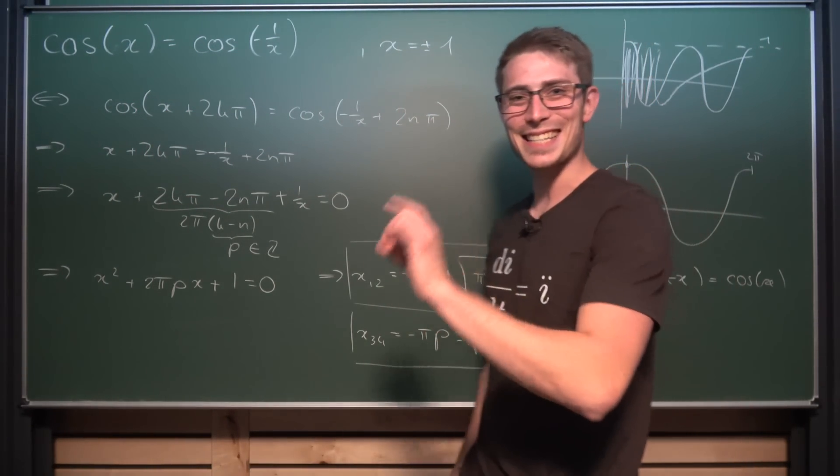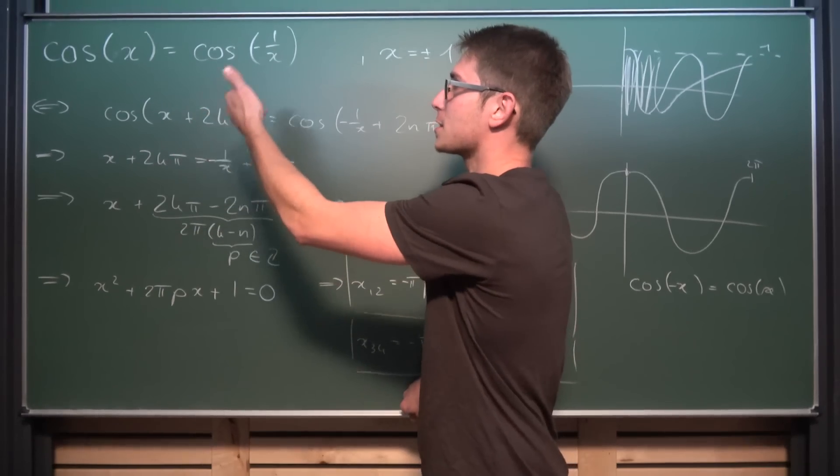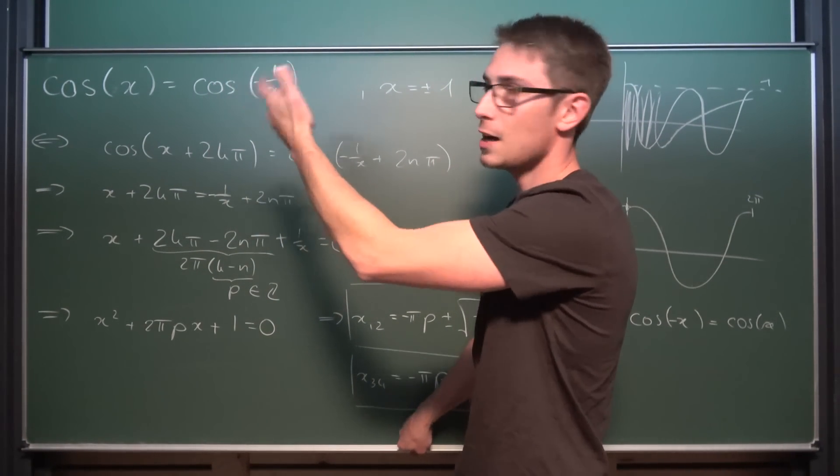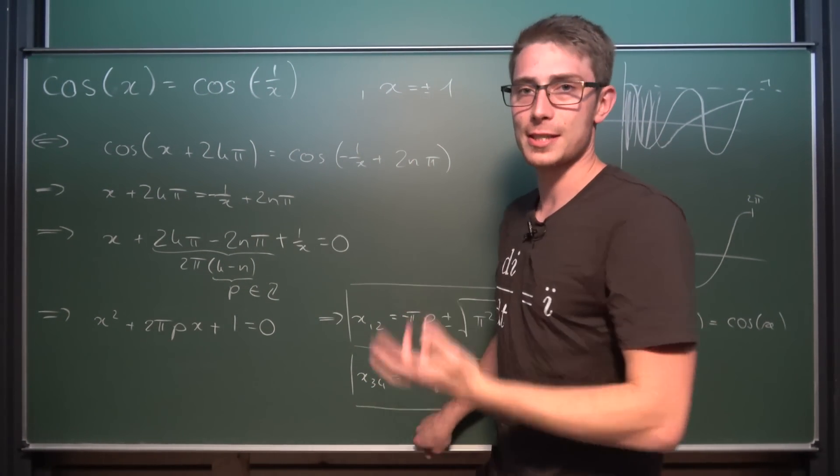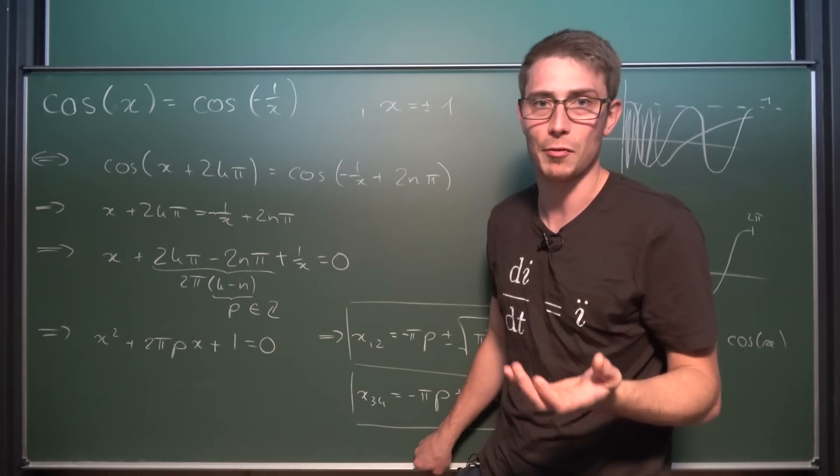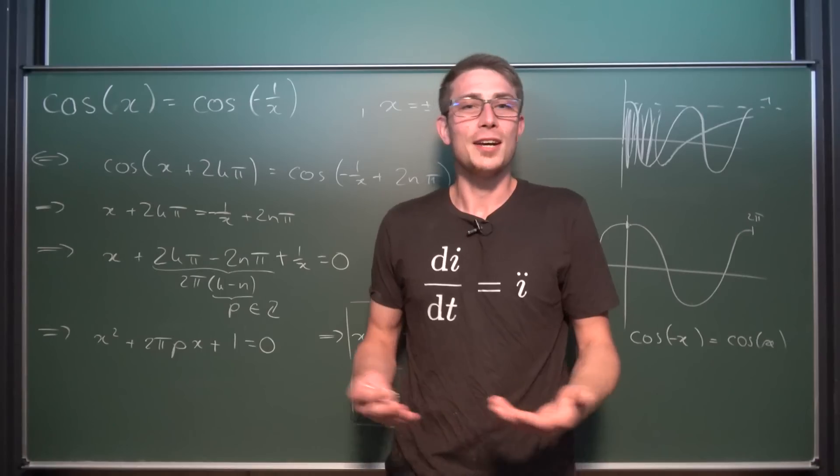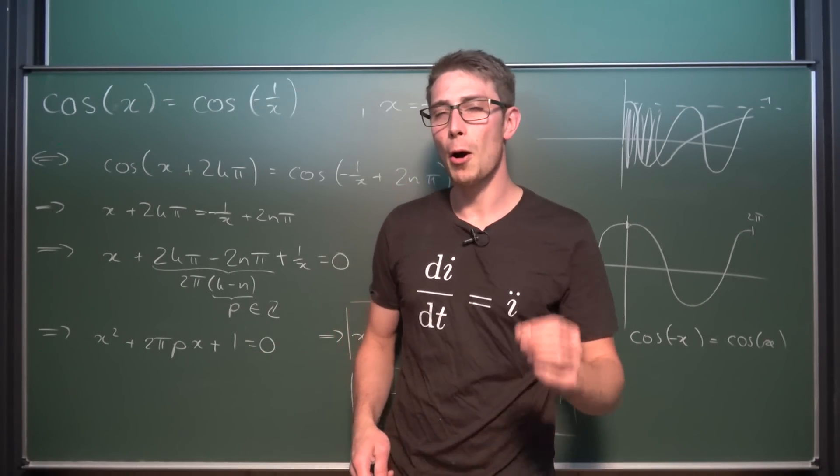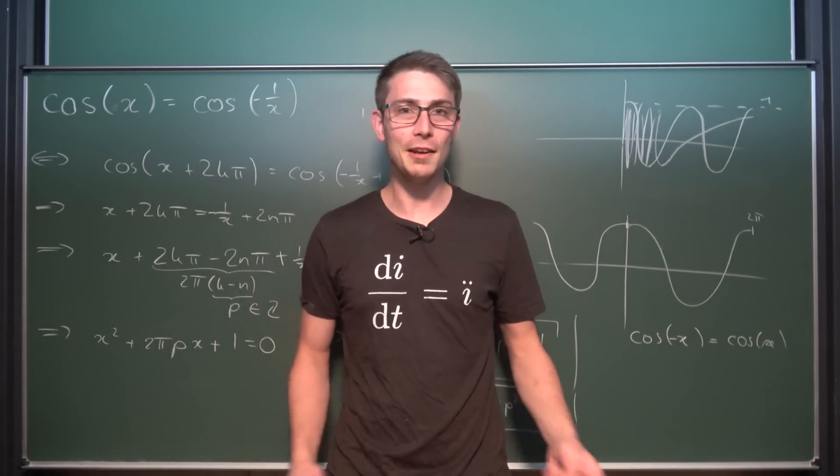And I'm leaving it as an exercise to the viewer to figure out what the solutions to sin(x) being equal to sin(1/x) are, and also the same with tangent, or maybe mix it around. When is the cosine of x equal to the sin of 1/x, for example? Try it around and see if you can find the solutions. And I hope you did enjoy what you have seen today. And if you did, why not make sure to check out the content of today's sponsor Brilliant.